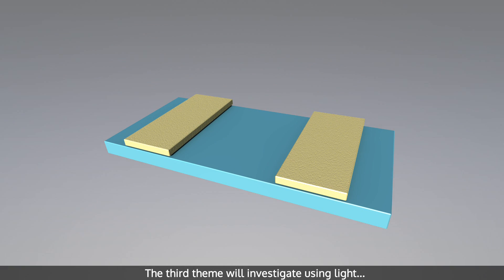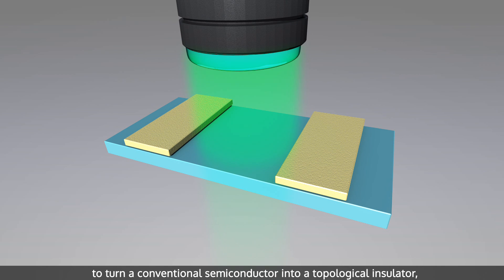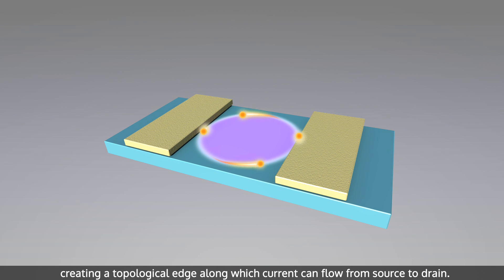The third theme will investigate using light to create a topological state or enhance superfluidity. For example, light may be used to turn a conventional semiconductor into a topological insulator, creating a topological edge along which current can flow from source to drain.